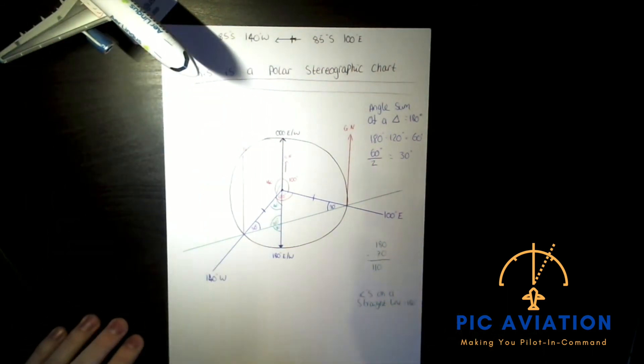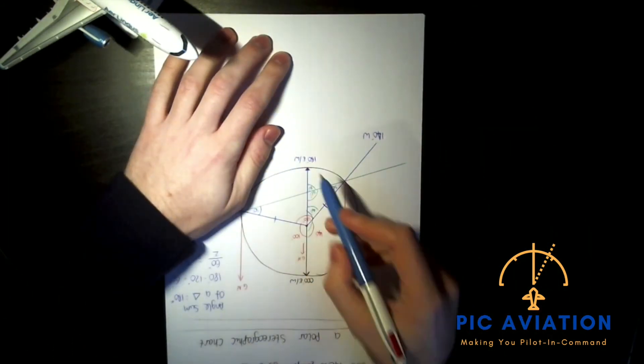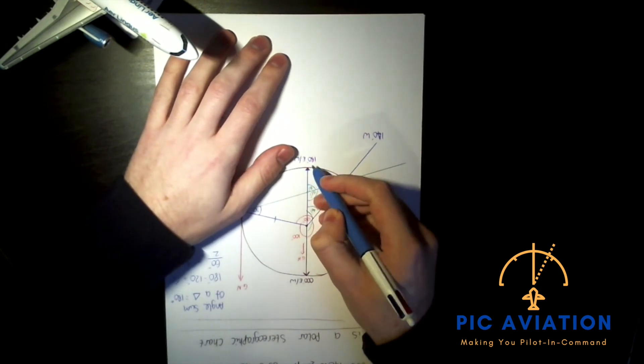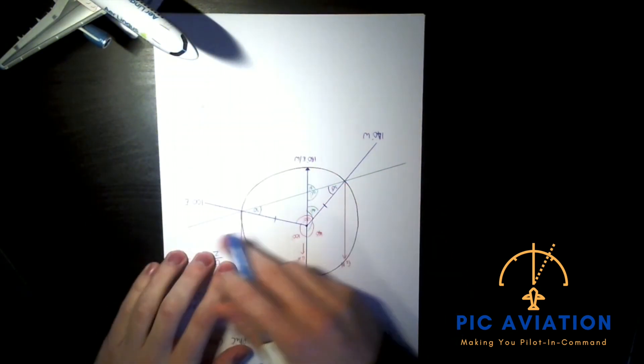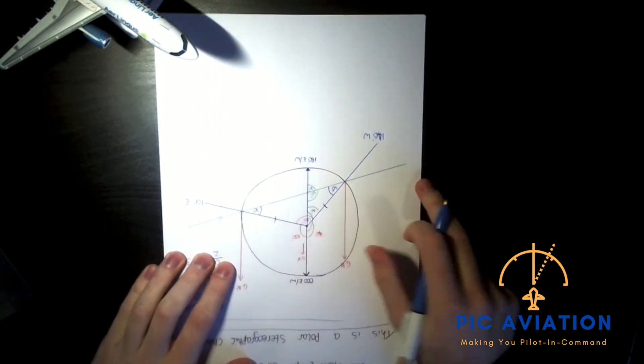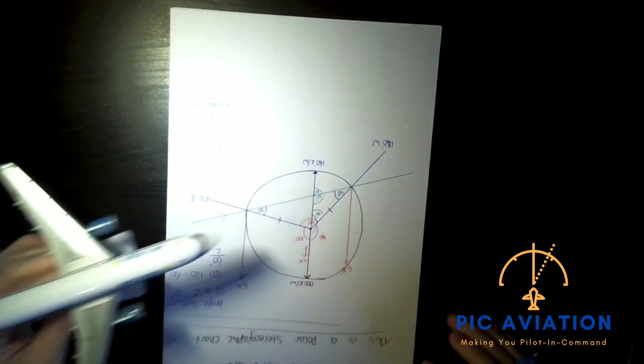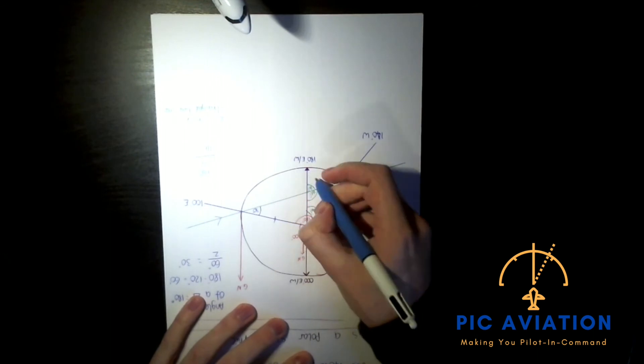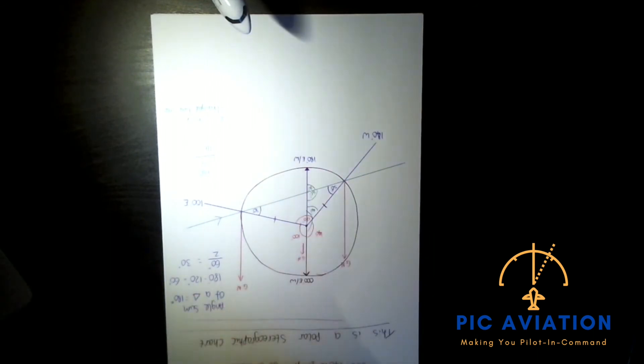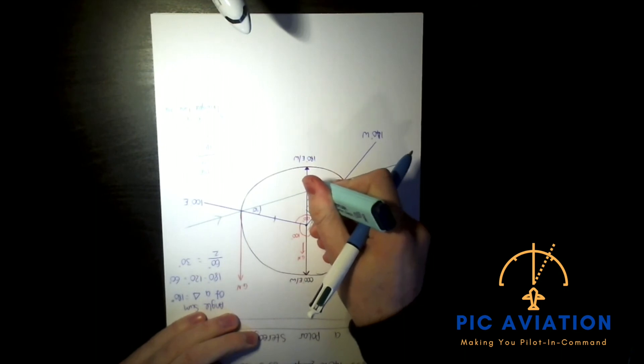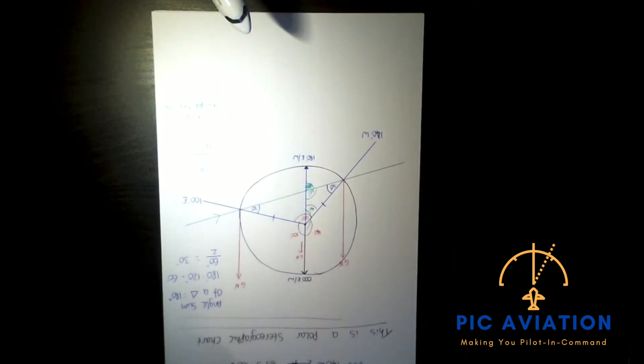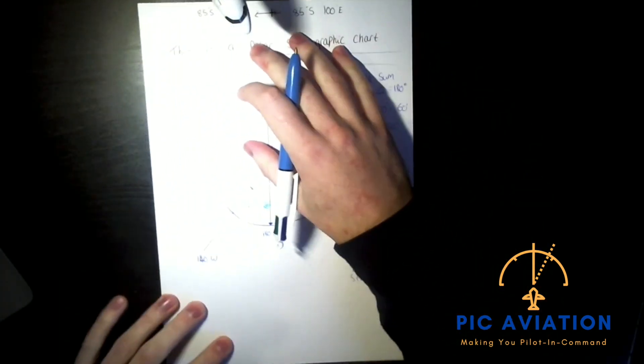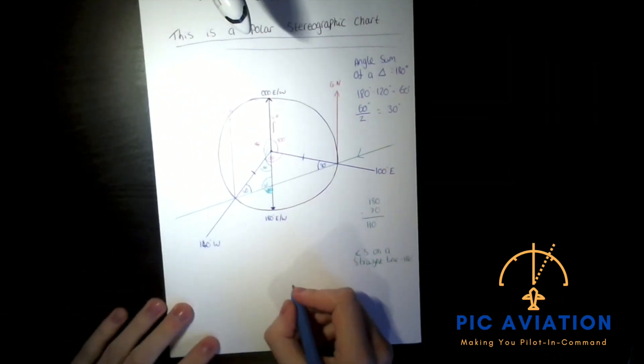Now what I'm going to ask you to do is measure the true track. To measure the true track we measure it from true north. Where's true north? This will point to true north. Measuring clockwise from true north will give us the direction of this line on a westerly basis. So the aircraft is flying that way. Because of that measuring clockwise from true north, it gives us that 70. Which I'm going to highlight with a highlighter. 70 degrees. And that's all true track is. So by process of simple geometry.